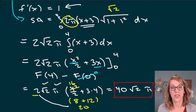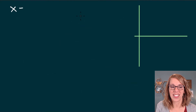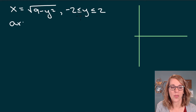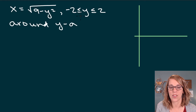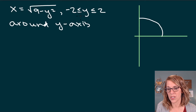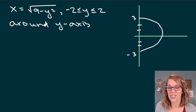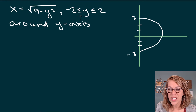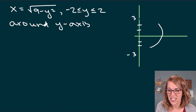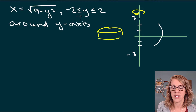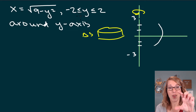Next we'll do one with the other orientation, around the y-axis. The function is x equals the square root of 9 minus y squared, and we're looking at surface area for y values between negative 2 and 2, revolving around the y-axis. This turns out to be a semicircle between negative 3 and positive 3, but we're only computing the surface area between y equals negative 2 and 2. Revolving this way means the band has a vertical orientation, and delta s has a y orientation.